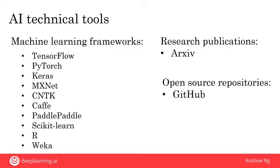Finally, many teams will also share their code freely on the internet, most commonly on a website called GitHub. This has become the de facto repository for open source software in AI and in other sectors. By using appropriately licensed open source software, many teams can get going much faster than if they had to build everything from scratch.